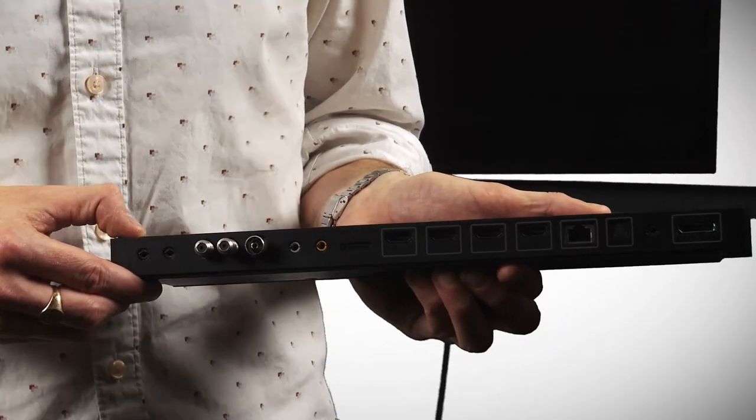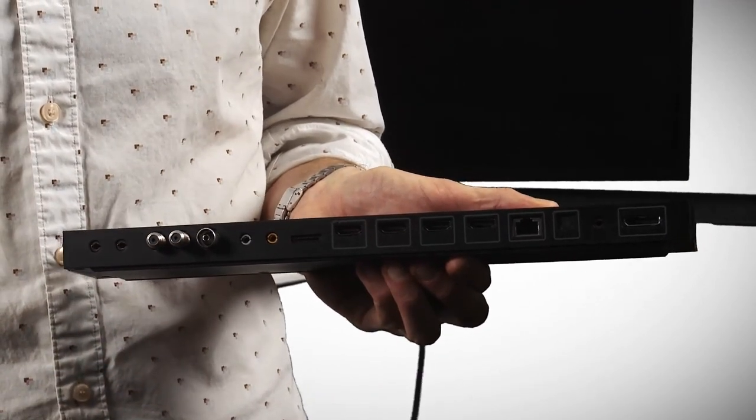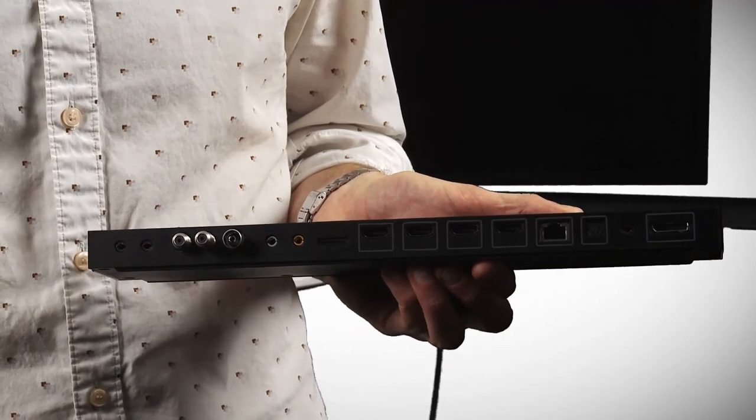The TV comes with Samsung's One Connect box, which basically tidies up all your connections in a sleek and stylish box, meaning you've only got two cables coming down from your TV.